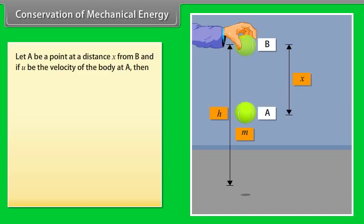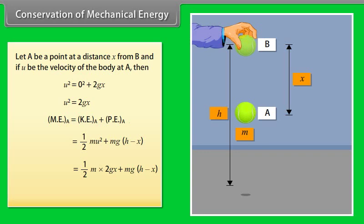Let A be a point at a distance x from B. And if u be the velocity of the body at A, then u² = 2gx. Mechanical energy of the body at A = kinetic energy of the body at A plus potential energy of a body at A. By calculating it, we get the mechanical energy of the body at A is mgh.